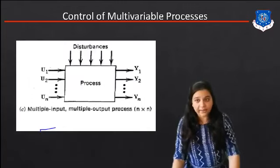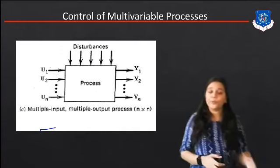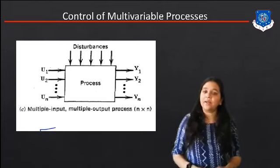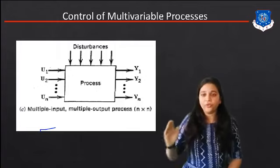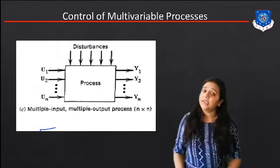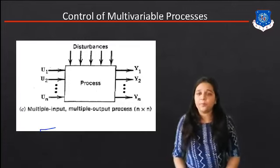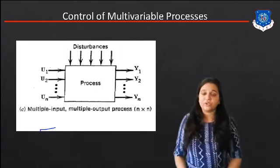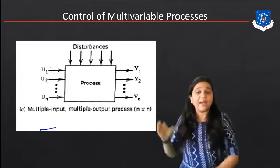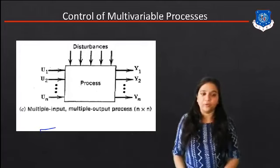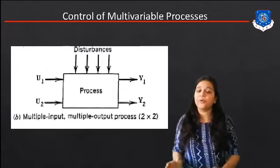Now, if we extend the single input, single output process to multiple input, multiple output, the diagram has multiple inputs U1, U2, up to UN, and multiple outputs Y1, Y2, up to YN, with a number of disturbances. We apply N inputs and get N outputs. Taking a 2×2 MIMO process as an example — 2 inputs and 2 outputs — there can be many difficulties because of the disturbances applied in this process.